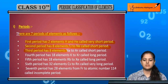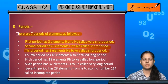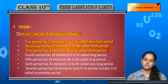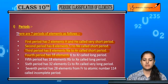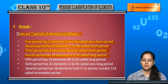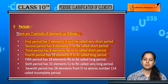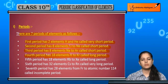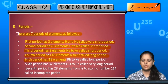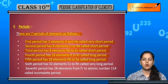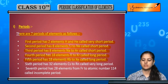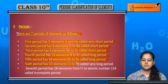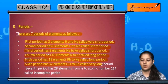The third period also has eight elements, from sodium to argon, and is also called a short period. The fourth period has 18 elements, from potassium to krypton, called a long period. The fifth period also has 18 elements, from rubidium to xenon, and is also called a long period.